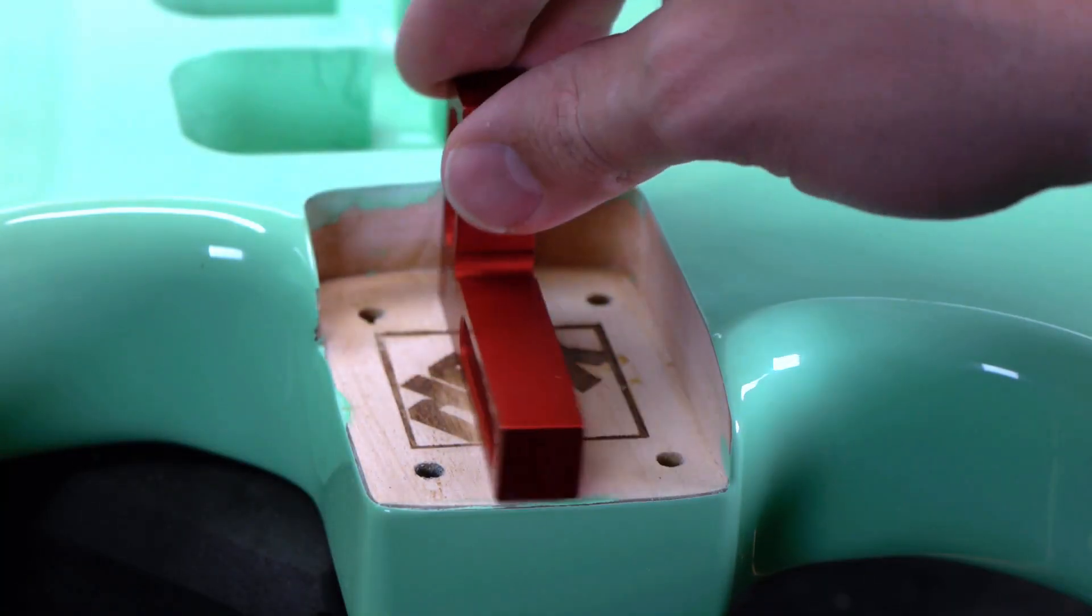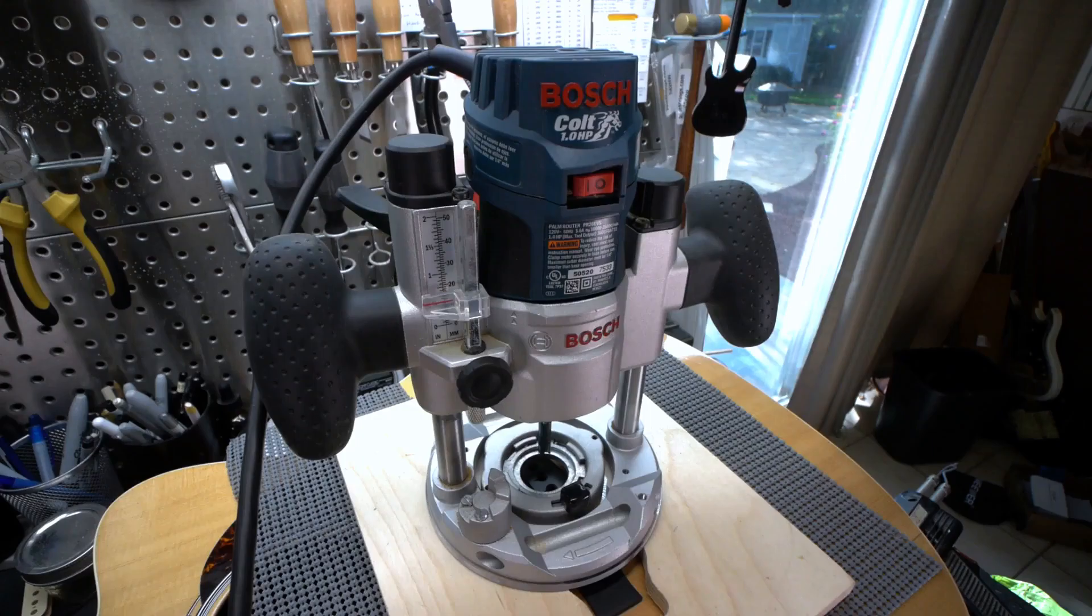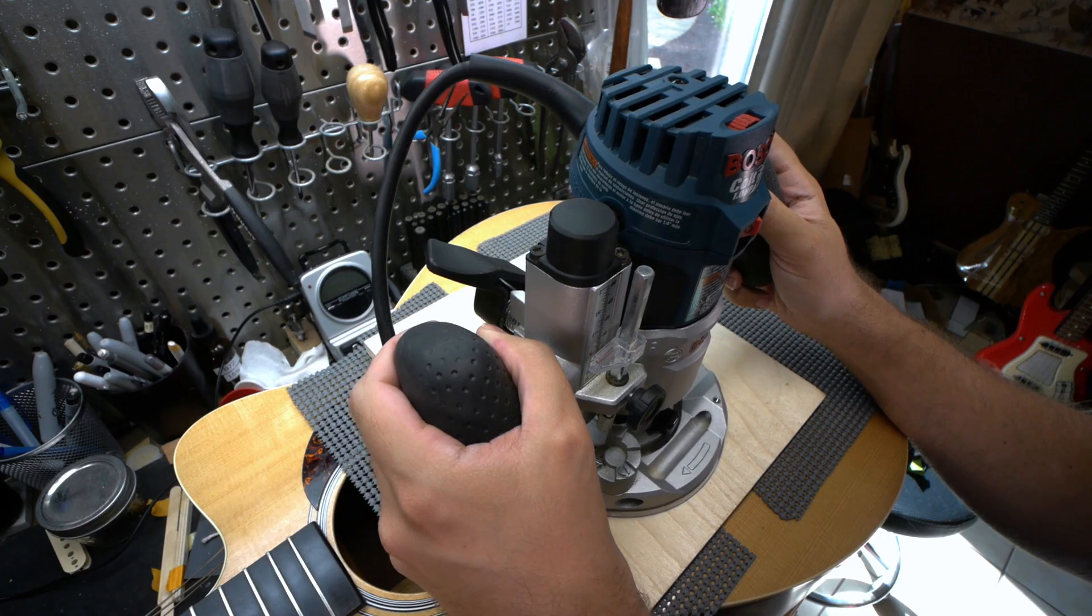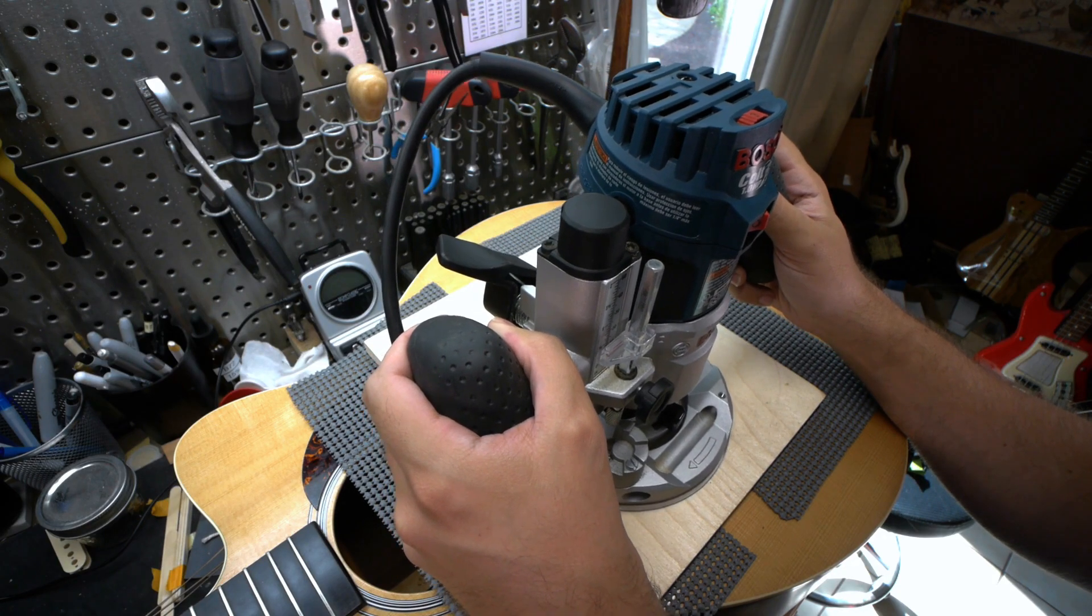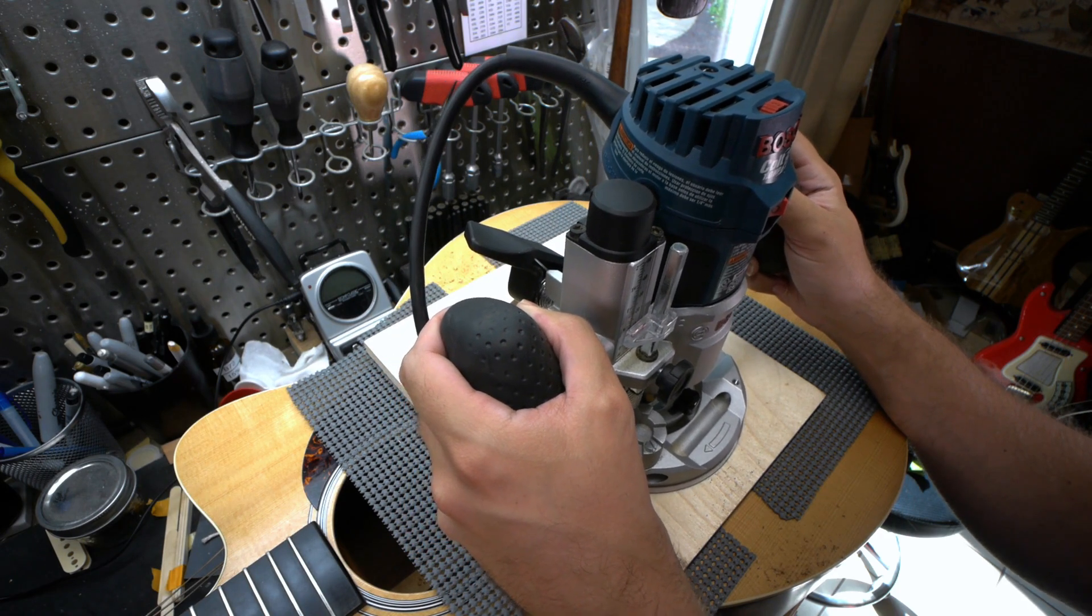So how do you fix this? That neck pocket has to come down a lot and it has to be flat. That's a job for a router with a guide bearing bit, with one caveat. The neck pocket edges are extremely delicate and the finish is prone to chipping, so a trim or full-sized router is out of the question.